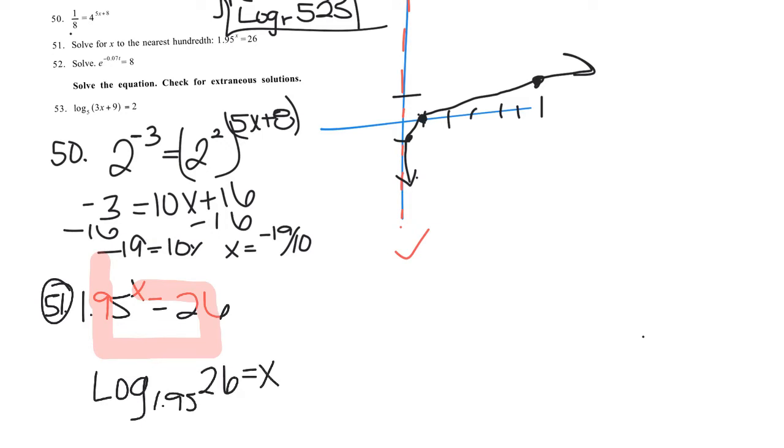And the question is, how do I find that? We do it in our calculator using the change of base formula. Log of 26 divided by the log of 1.95, remembering to close parentheses. So the log of 26 divided by the log of 1.95, plug that in your calculator, remembering to put in your parentheses, and you should get approximately 4.879.